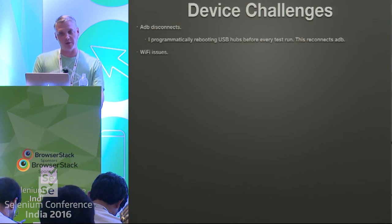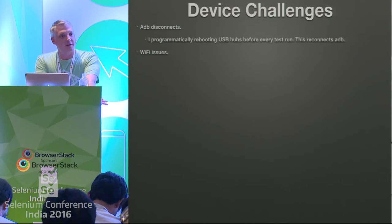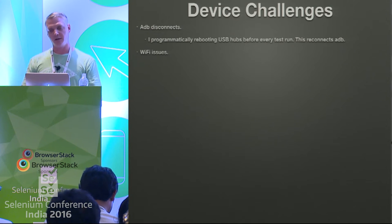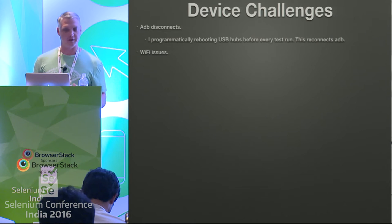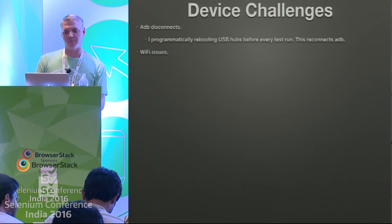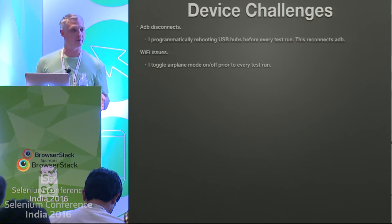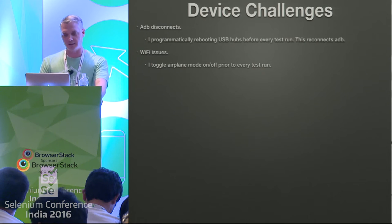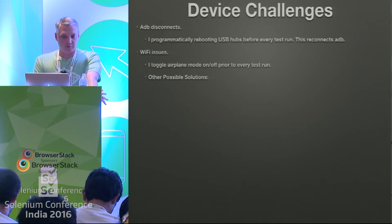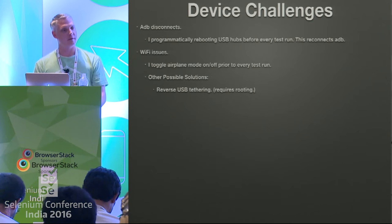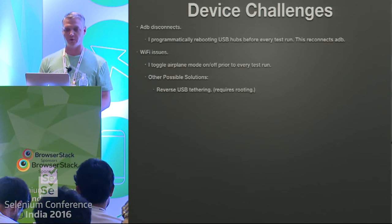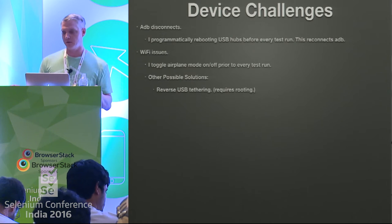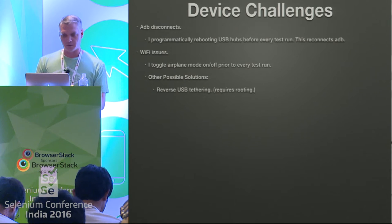Another problem is Wi-Fi issues — the device is connected and then 30 minutes later it's not, or it's connected to the router but has the exclamation mark and can't access the internet. The fix I found was to toggle airplane mode on and off before every test run — that refreshes the Wi-Fi connection. Other solutions I tried: you can reverse USB tether your device to share the internet connection from your computer to the phone, but it requires rooting, which I didn't want to do for devices that weren't mine.